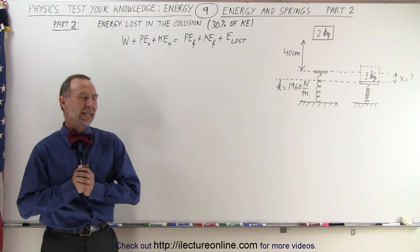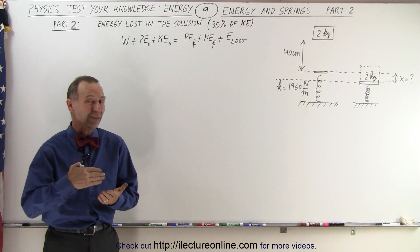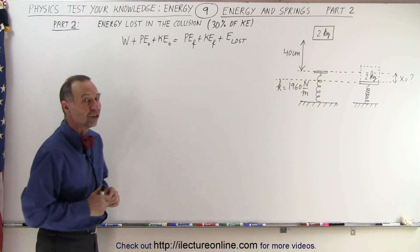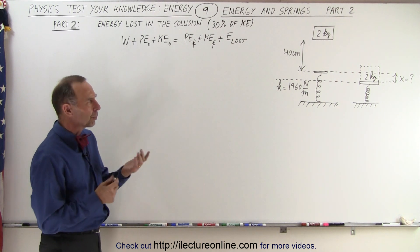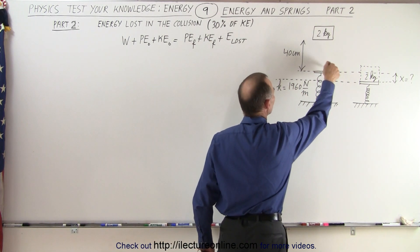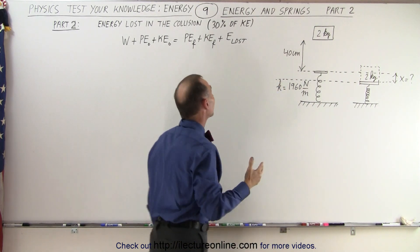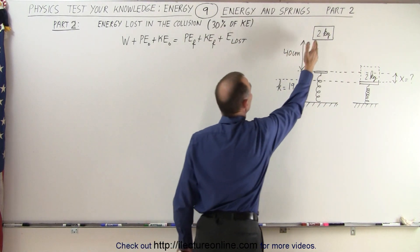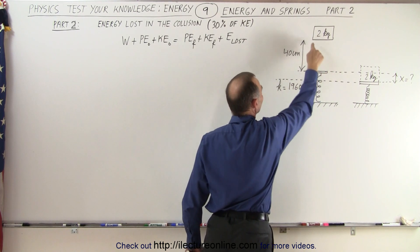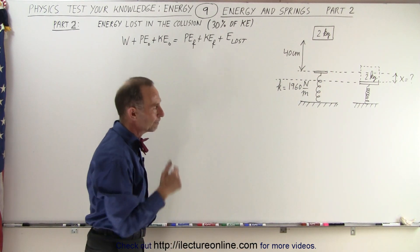Welcome to our lecture online. Here's the second part of that same problem we just did in the previous video, when there was no energy lost in the collision. What we're going to do now is assume that as the block hits the spring, there's some energy lost — 30% of the kinetic energy gained by the block as it fell down from a height of 40 centimeters by the time it reaches the spring.